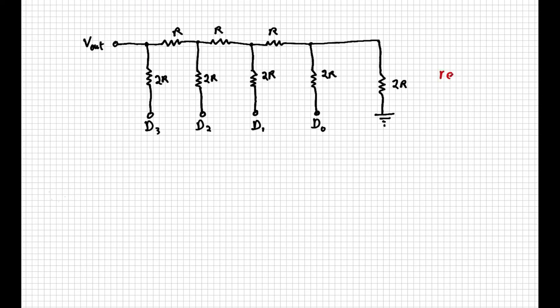So, for example, with a 4-bit converter, we have a resolution of 1 over 2 to the power of 4, which means 1/16th of the voltage assigned to the digit 1.